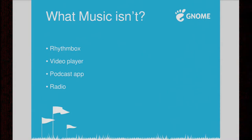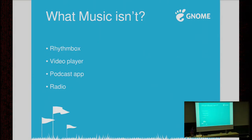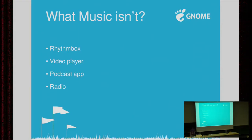Music is definitely not Rhythmbox — Rhythmbox has podcasts, Rhythmbox can play radio, and plenty of other stuff that we don't want. Maybe in the future we could have another app sharing the same source code to do those activities, just like Books does for Documents — they live in the same source tree but have different launchers. I really think we shouldn't mix the contexts: managing a podcast is not the same as managing a music library, and same for radio.